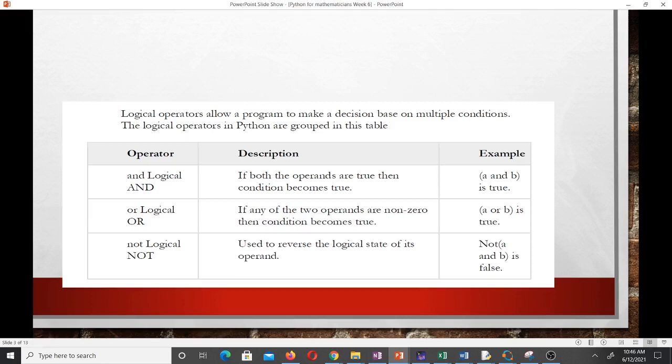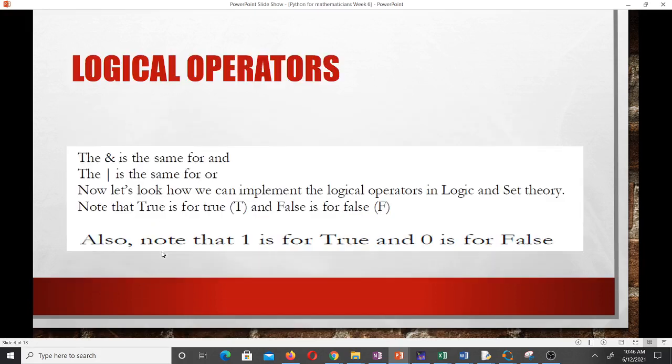Logical operators allow a program to make a decision based on multiple conditions. The logical operators in Python are grouped in this table. We have AND, OR, and NOT. The ampersand is the same for AND, and this symbol here is the same for OR. Now let's look at how we can implement the logical operators in logic and set theory. Note that True, with capital T, is for true, and False is for false.